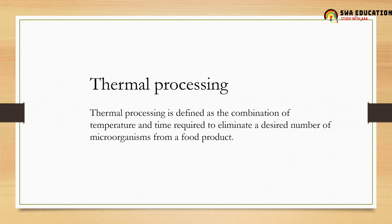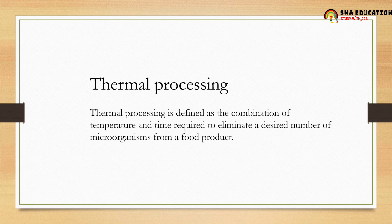We fix the temperature and the time to reduce microorganisms, especially the harmful ones. This process which uses a combination of temperature and time is called thermal processing. So if asked: 'dash is defined as a combination of temperature and time required to eliminate a desired number of microorganisms from a food product,' the answer is thermal processing.